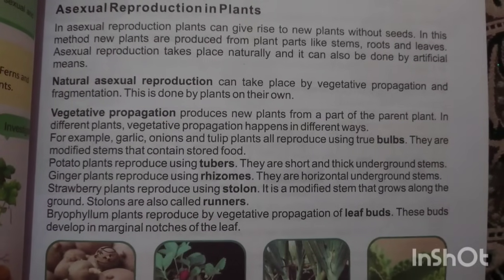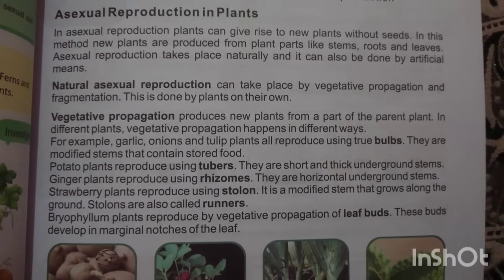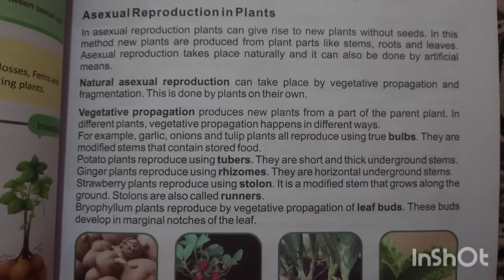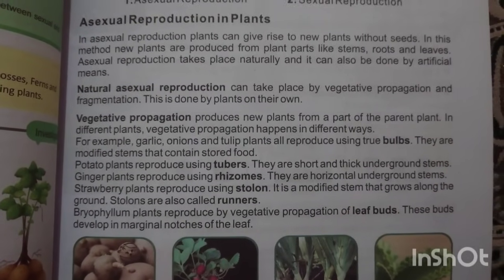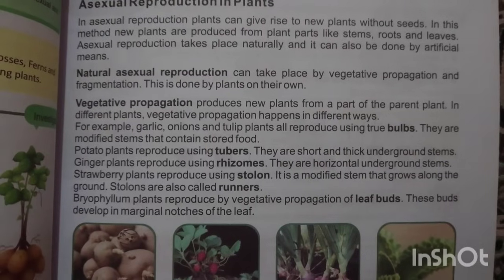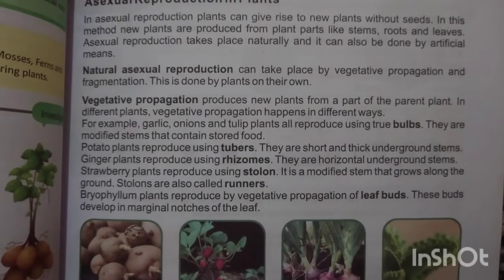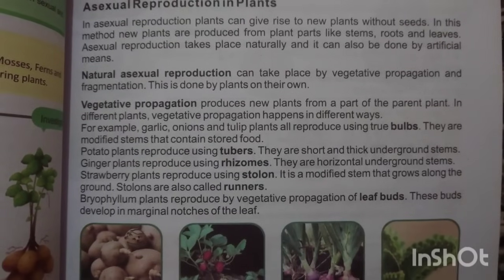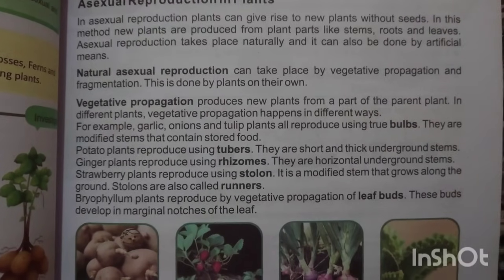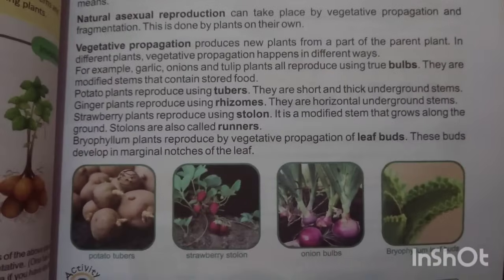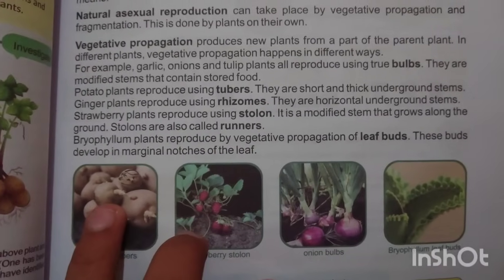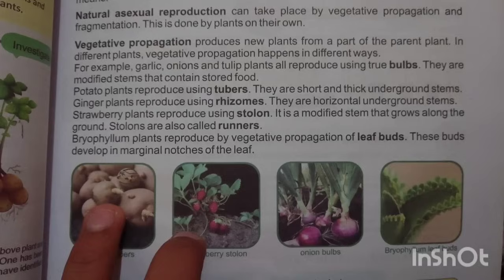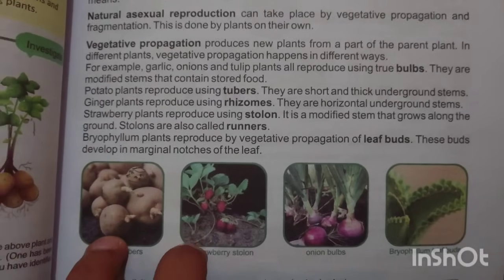Potato plants reproduce using tubers — they are short, thick underground stems. Ginger plants reproduce using rhizomes, which are horizontal underground stems. Strawberry plants reproduce using stolons, a modified stem that grows along the ground. Stolons are also called runners.